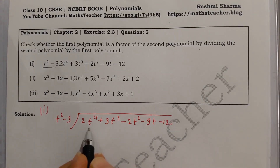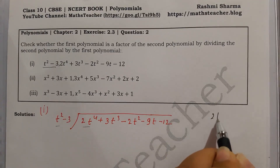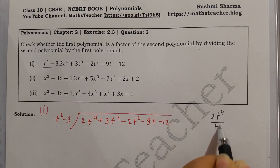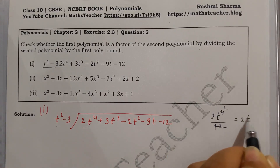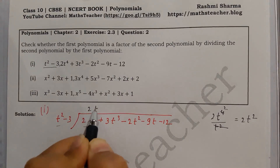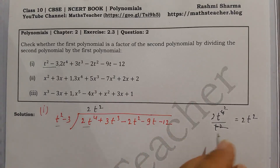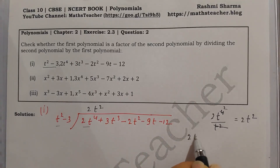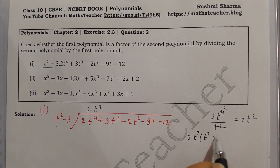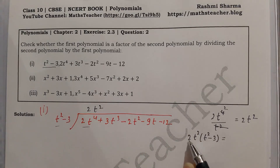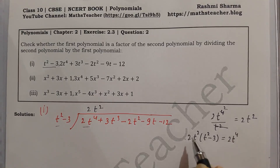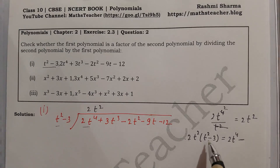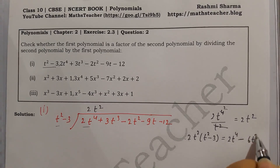We divide the first term by the first term of the divisor: 2t⁴ divided by t², t² cancels, so the first quotient is 2t². Now we multiply 2t² by the divisor t² − 3, giving 2t⁴ − 6t².